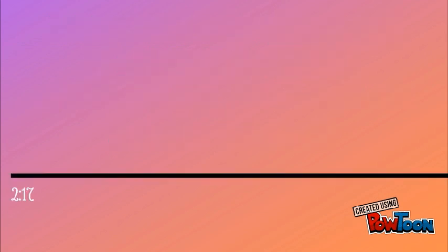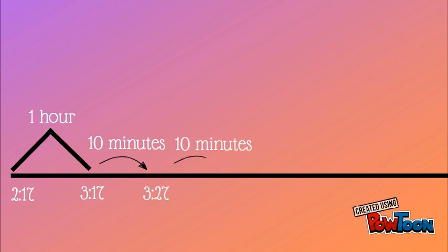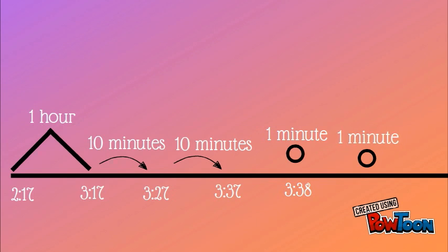Let's use the mountain, hill, and rock strategy. Start at 2:17 and go 1 hour to 3:17. In 10 minutes it'll be 3:27. In 10 more minutes it will be 3:37. In one minute it'll be 3:38, and in another minute it'll be 3:39.